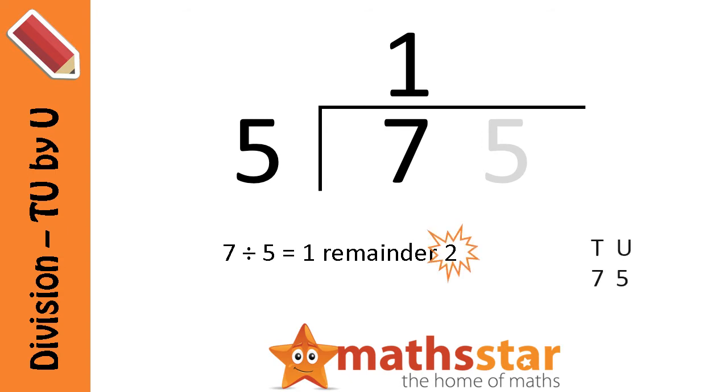This is where our knowledge of tens and units comes in. The 7 was in the tens column. So when we carry 2 over, we're really carrying over 2 tens, which is 20. So when we carry our remainder over to the number 5, we're not adding on 2, we're adding on 20. And 5 add 20 is 25.